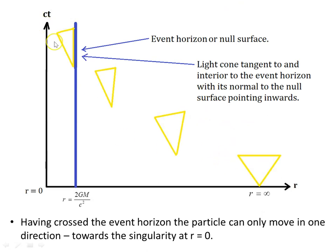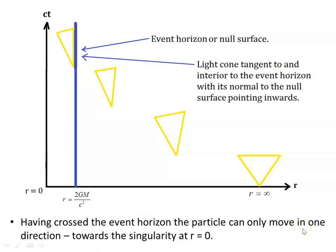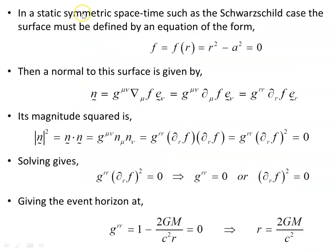Looking at spacetime diagrams: r = 0 is the real physical singularity; r = 2GM/c² is the coordinate singularity — the Schwarzschild radius. The light cones close up as we get closer to the mass. The event horizon is the null surface here — the light cone is tangent to it and interior to the event horizon. The normal to the null surface points inward. Any particle having crossed this line is never coming out again and heads towards the singularity at r = 0.